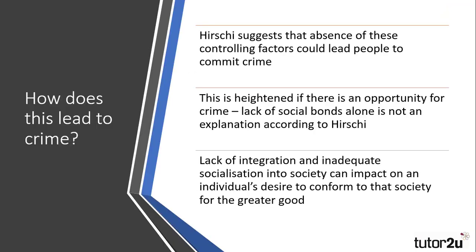So how does Hirschi explain that crime does occur? He suggested that the absence of these controlling factors can lead people towards committing criminal or deviant acts. However, he also noted that a lack of social bonds on its own is not sufficient to explain criminal behaviour — there also need to be opportunities to commit crime. A lack of integration and inadequate socialisation into society can impact on an individual's desire to conform, with those being rejected more likely to commit crimes, whilst those embedded in the community seek to preserve the common good.